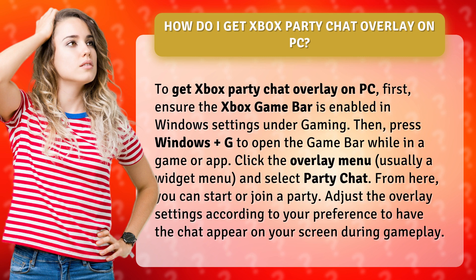Click the Overlay menu, usually a widget menu, and select Party Chat. From here, you can start or join a party. Adjust the Overlay settings according to your preference to have the chat appear on your screen during gameplay.